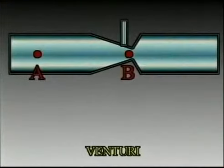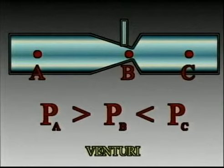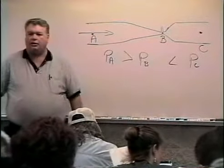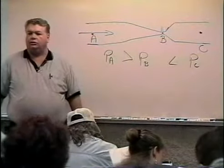Now, the minute it gets through B, it comes back over here to point C. Well, point C is almost the same as point A. The only difference is we've had some friction loss through the Venturi. So the pressure goes back up again. Pressure at B is going to be less than the pressure at C. We gain pressure back when it expands back up to the full-size pipe.